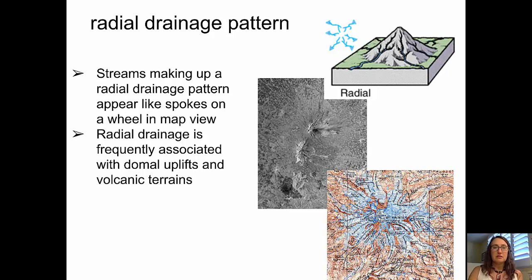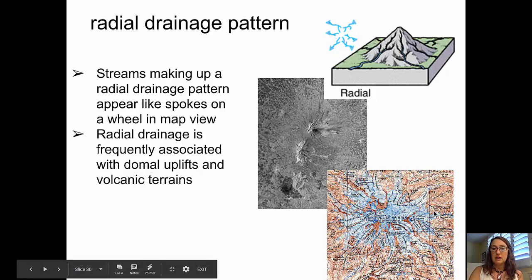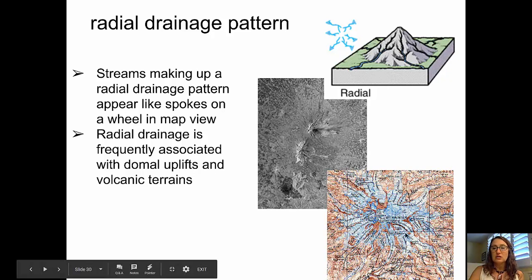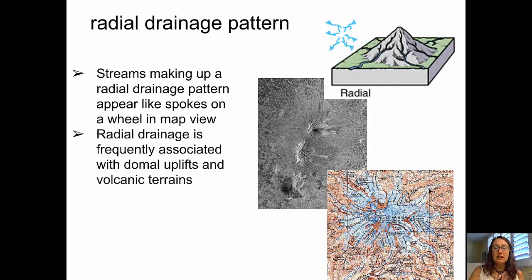Finally, the radial drainage pattern. In a radial drainage pattern, streams make a radiating pattern like spokes on a wheel when viewed from above. You can see in the bottom right-hand corner a map of the Mount Rainier area — the blue areas radiate from the central high of Mount Rainier outward and away. Radial drainage is frequently associated with domal uplifts and with volcanic terrain.